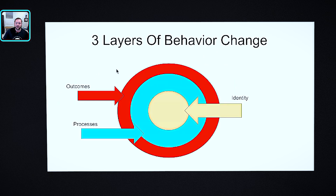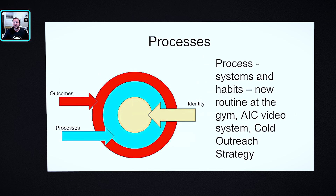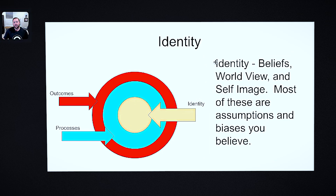There are basically three layers of behavior change: one is outcomes, two is processes, and three is identity. Outcomes are things you want to have happen — losing weight, growing your med spa, publishing a book, becoming an expert injector. Processes are the systems and habits that lead to the outcome — like a new gym routine, the AIC video system, the cold outreach strategy we just finished in the fourth quarter challenge. A lot of people have the process but struggle because of what we're going to talk about next: identity. Your identity is your beliefs, your worldview, and your self-image — the way you view yourself.